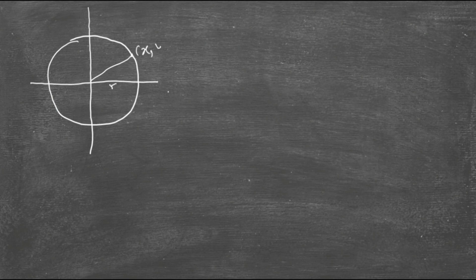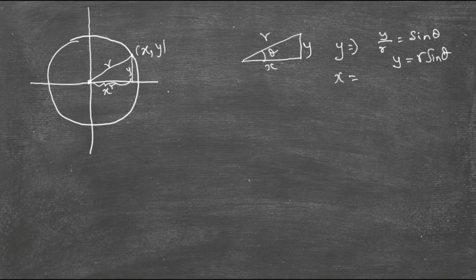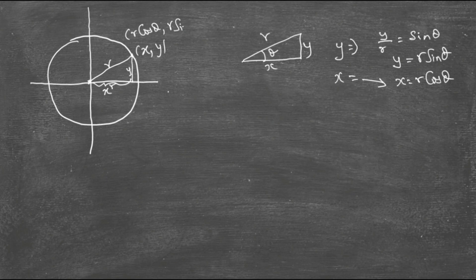Consider a circle that is not a unit circle, so the radius is r. If you take any point (x, y), the distance from the origin is r units. You have a right-angled triangle with sides x, y, and hypotenuse r. If this angle is θ, then y/r = sin θ, so y = r·sin θ instead of just sin θ as in the unit circle. Similarly, x = r·cos θ. Therefore, the point (x, y) is written as (r·cos θ, r·sin θ).